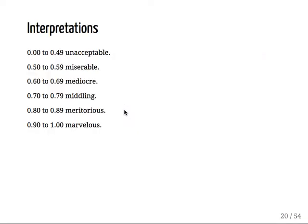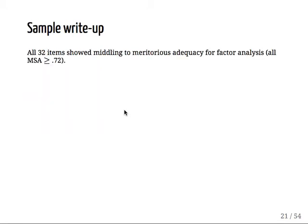And you have some beautiful terminology. So you have 0 to 0.49 unacceptable, 0.5 to 0.59 miserable. Mediocre, middling, meritorious, and marvelous. I always like to say, we have a marvelous solution in order to do factor analysis. But those are the terms they suggested. I highly recommend you use those terms so they stay in scientific literature. So you can say all 32 items show middling to meritorious adequacy for the factor analysis. Because we went with the lowest one, which is 0.72.